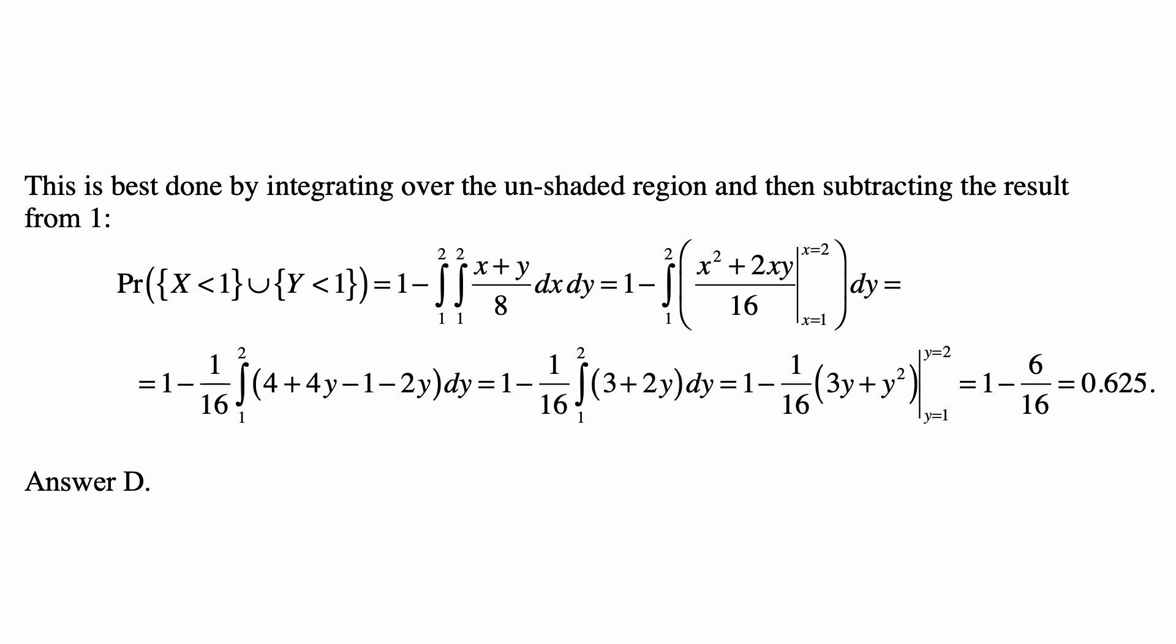That becomes 1 minus 1/16 times the integral of (4+4y-1-2y)dy. So, 1 minus 1/16 times the integral from 1 to 2 of (3+2y)dy. And that's 1 minus 1/16 times (3y+y²) evaluated from y equal to 1 to y equal to 2.